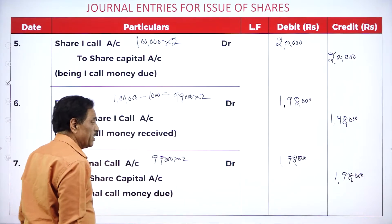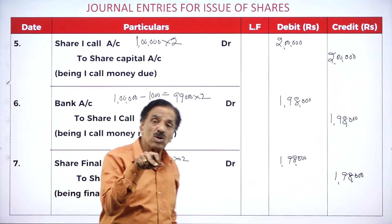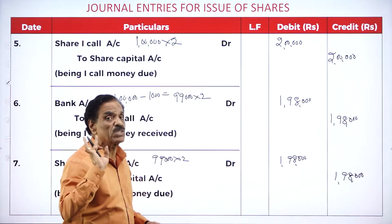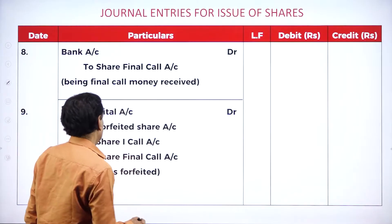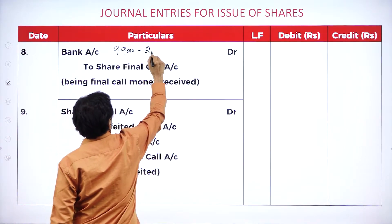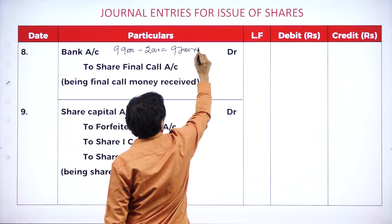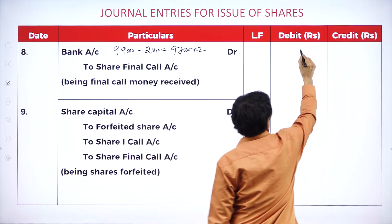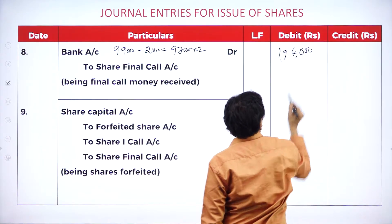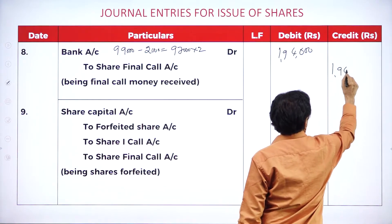Share final call account debit to share capital — this money is to be received. Now another man holds 2,000 shares and fails to pay the final call. Out of 99,000 shares, 2,000 shares money could not be received. So we receive 97,000 shares at rupees 2 = 1 lakh 94,000. Bank account debit 1,94,000 to share final call account.